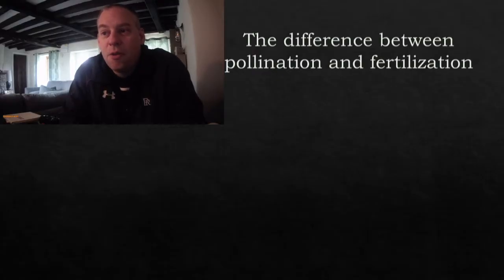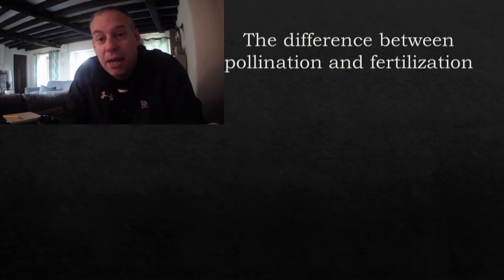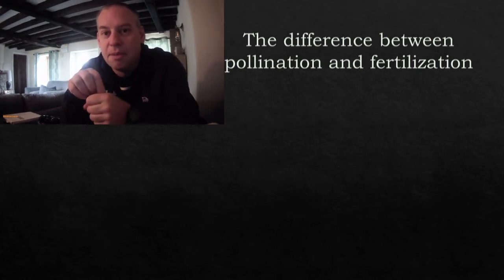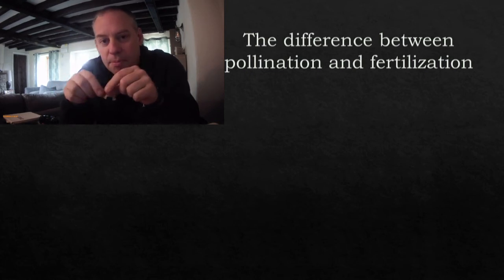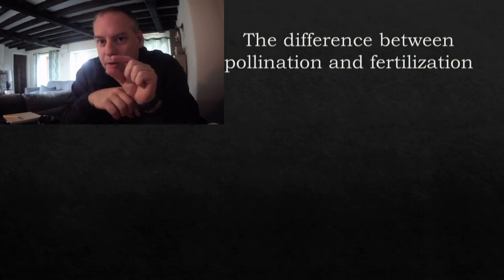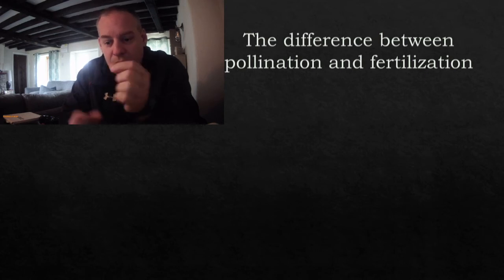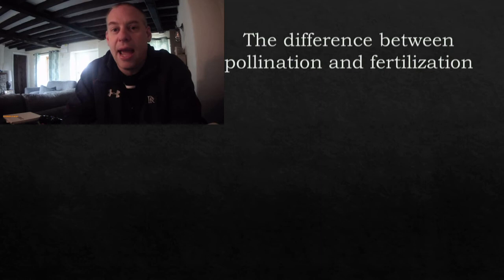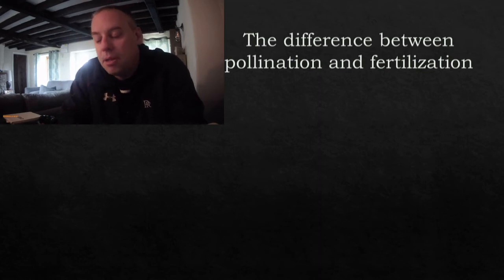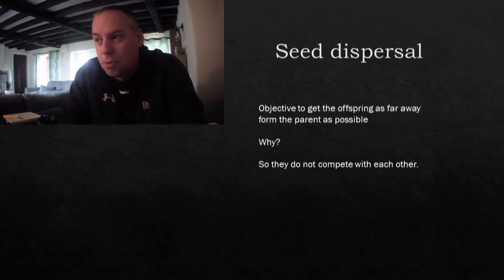Welcome back. Pollination is where the pollen lands on the stigma. Fertilisation is where the two gametes meet and fuse, forming a zygote — the first initial cell of the new plant. That grows into a seed. The ovary grows into the fruit. And then we want the seed to be placed as far away from the parent plant as possible — that's called seed dispersal.